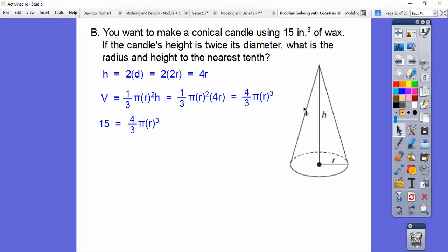So now we set the 15 equal to that 4 thirds pi r cubed. And what I'm going to do is wrap this in parentheses right there and multiply both sides by the reciprocal of 4 thirds and divide by pi. So we're going to multiply both sides by 3 over 4 pi. So they cancel out on the right over there. And then, so I did 15 times 3, which is 45, and then 45 divided by 4 pi gives me about 3.58. So now we've got to cube root that. Again, I hope you have a calculator.